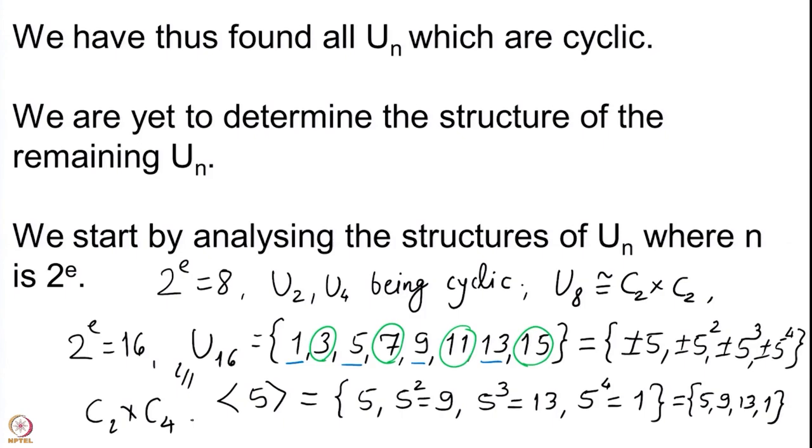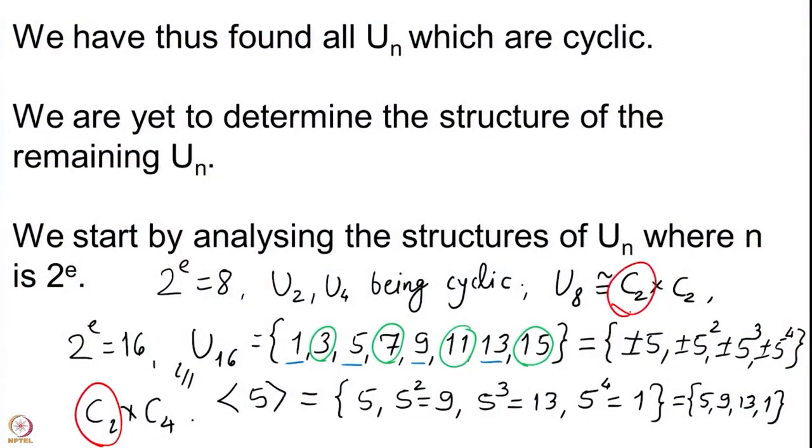Thus U(16) ≅ C2 × C4. The structure of U(2^e) for 2^e ≥ 8 is that it will have a direct factor which is C2. In both the cases of U(8) and U(16) we got a direct factor of C2, together with one more cyclic subgroup which gives U(2^e) completely. We will prove that U(n) where n=2^e ≥ 8 is a product of two cyclic groups, one of them being of order 2. I hope to see you in the next lecture to study this. Thank you.